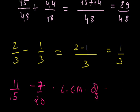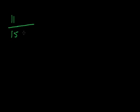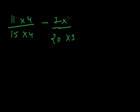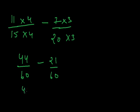LCM of 15 and 20 will be 60. Now, to convert 11 by 15 with the denominator 60, I have to multiply the numerator and the denominator by 4. So, it will be 44 upon 60, and I have to minus 7 by 20. To convert 20 into 60, I have to multiply it by 3, so I will multiply the numerator and denominator by 3. Here, I will get 44 upon 60 minus 21 upon 60. Now, the denominators are same, so we will write 60. 44 minus 21, so it will be equal to 23 upon 60.